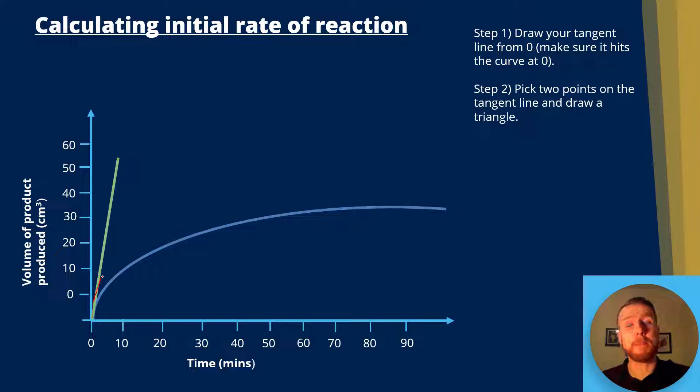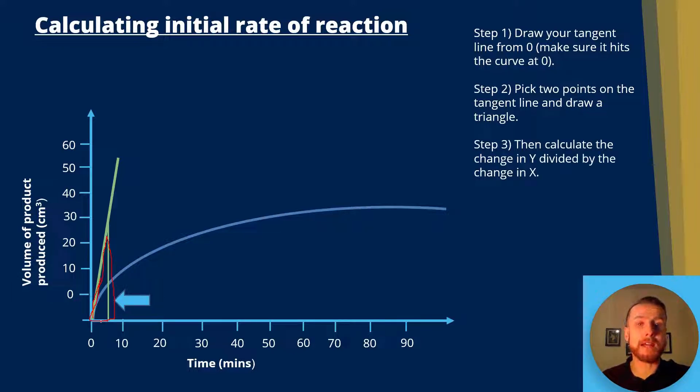Now step two is to pick two points on the tangent line and draw a triangle. So I'm going to take this point here and go along the x-axis to the bottom there. So this is our triangle here. That's our tangent. Now I'm going to calculate the change in y divided by the change in x, so y over x.